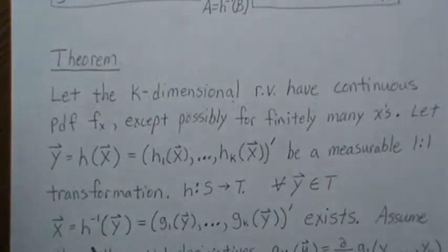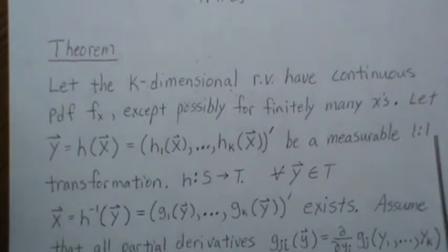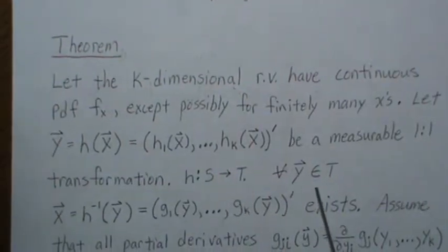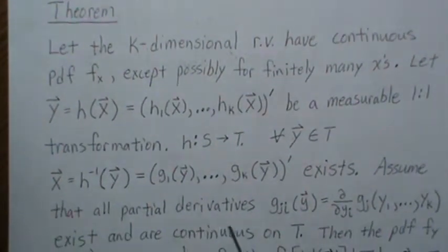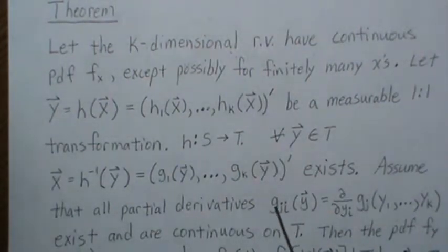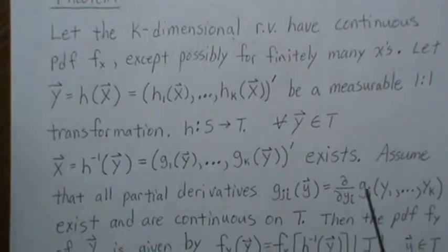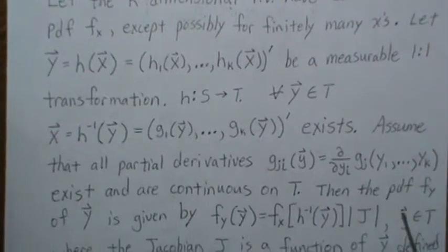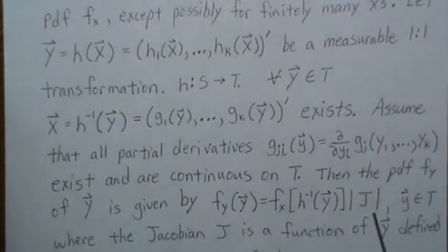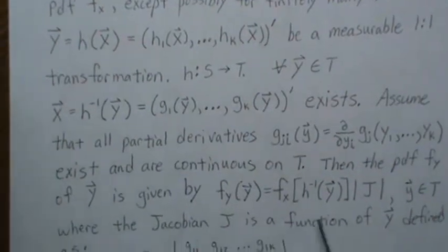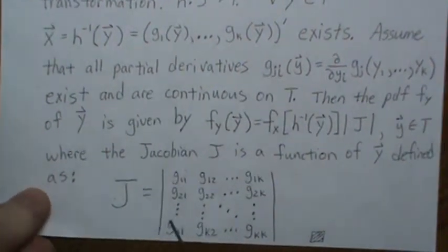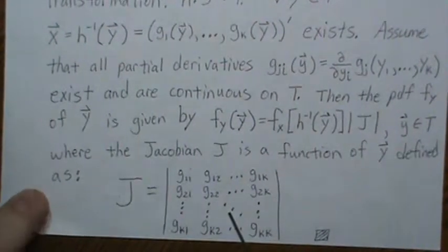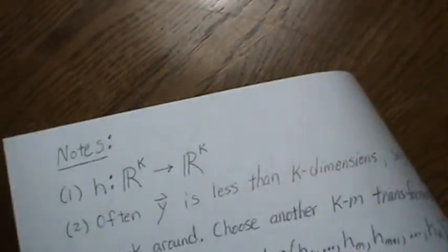Since h is a one-to-one transformation from S to T, for every vector in T the inverse function exists. We also assume all partial derivatives g_ji exist and are continuous on T. Then the PDF of the vector y is given by the formula f_Y(y) = f_X(g(y)) · |J|, where J, the Jacobian, is a function of the vector defined by the matrix of partial derivatives.